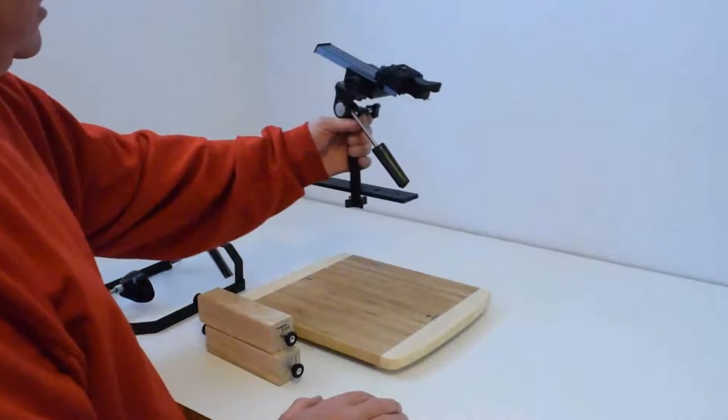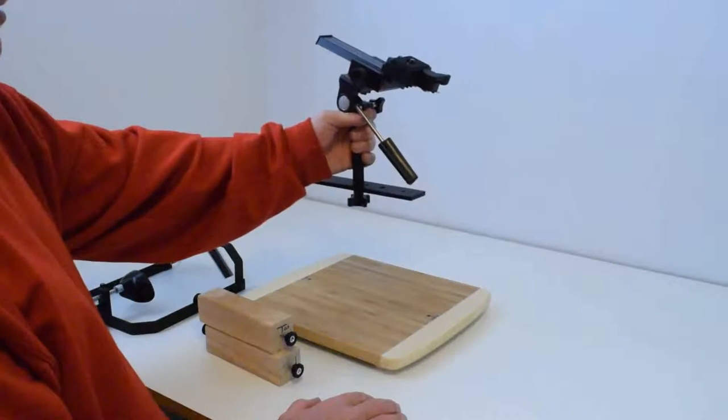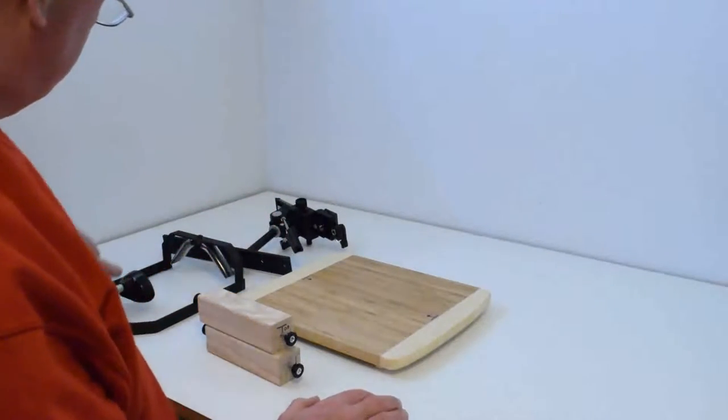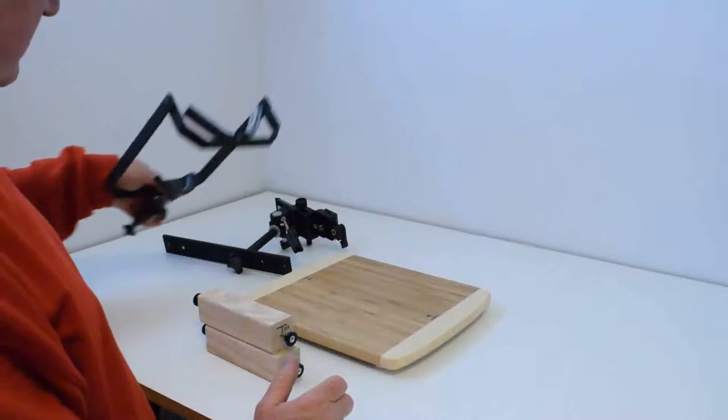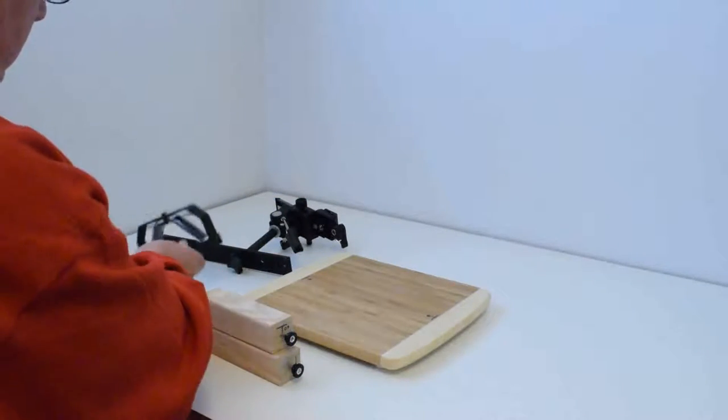There's the crossbar which has the camera support that goes on the two pillars, and then the chin rest/forehead rest combo unit that goes at the front and will be mounted on the crossbar.